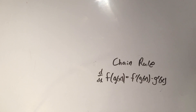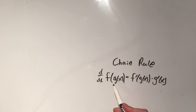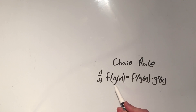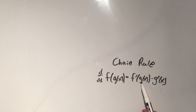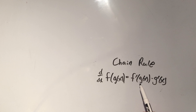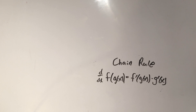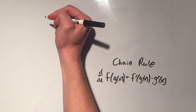The last main rule for functions is the chain rule, and that's for taking derivatives of compositions of functions — functions inside of functions. It says I take the derivative of the outside function f, leave the inside function alone, and then multiply by the derivative of the inside function.